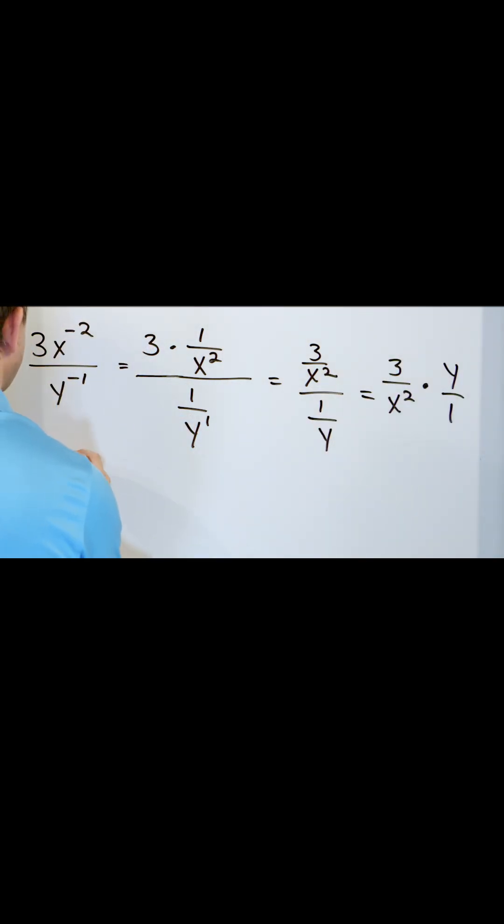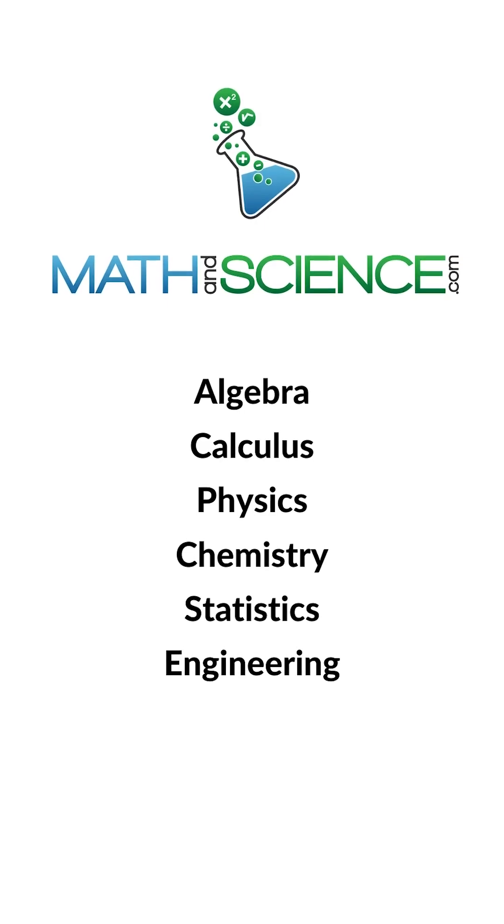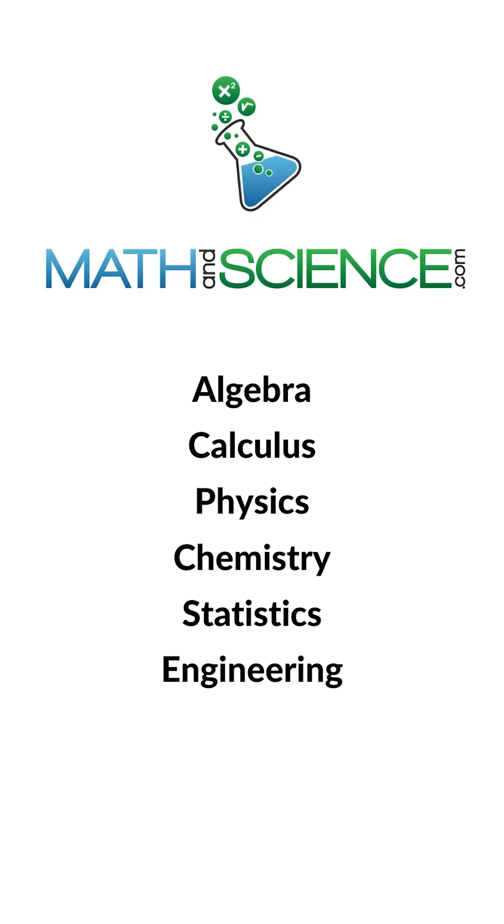3 times y will give you 3y, and then x squared times 1 will give you x squared. So you get 3y over x squared. This is the final answer. Learn anything at mathandscience.com